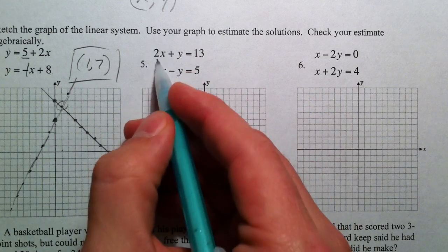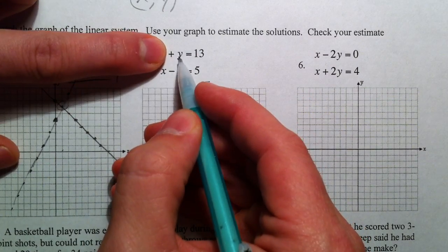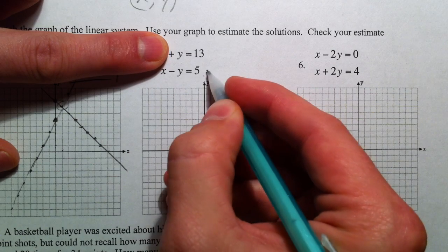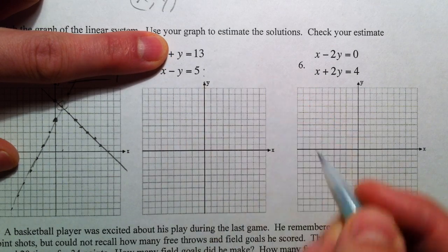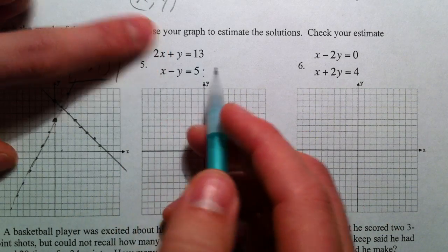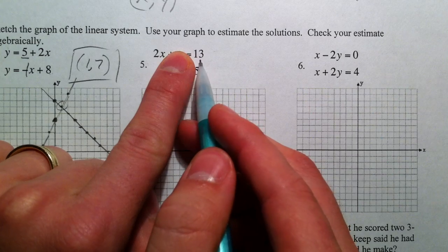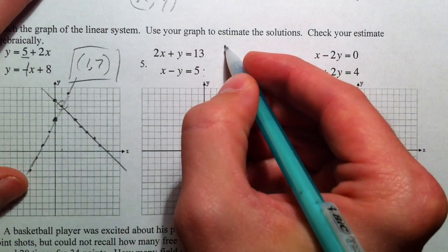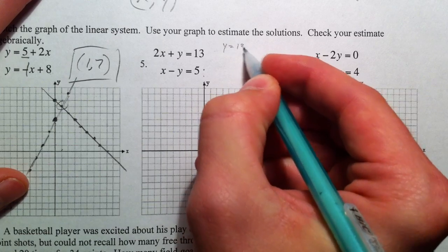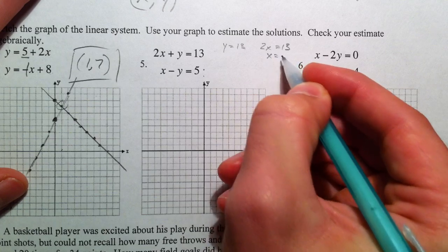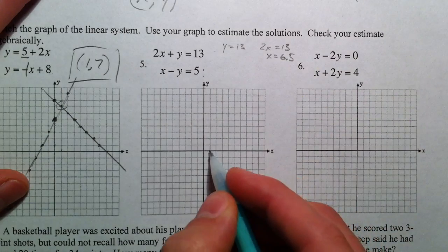For the equation 2x plus y equals 13, if x is 0, that cancels out and y is 13. So that's 10, 11, 12, 13. I'm going to estimate there a little bit, but we can use it to our advantage. And then if y equals 0, 2x equals 13, so x equals 6.5.